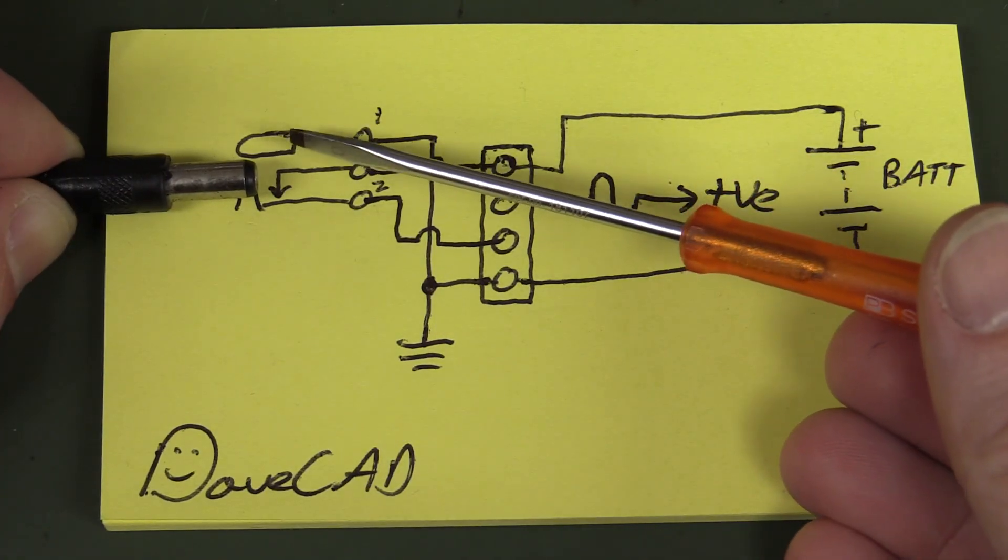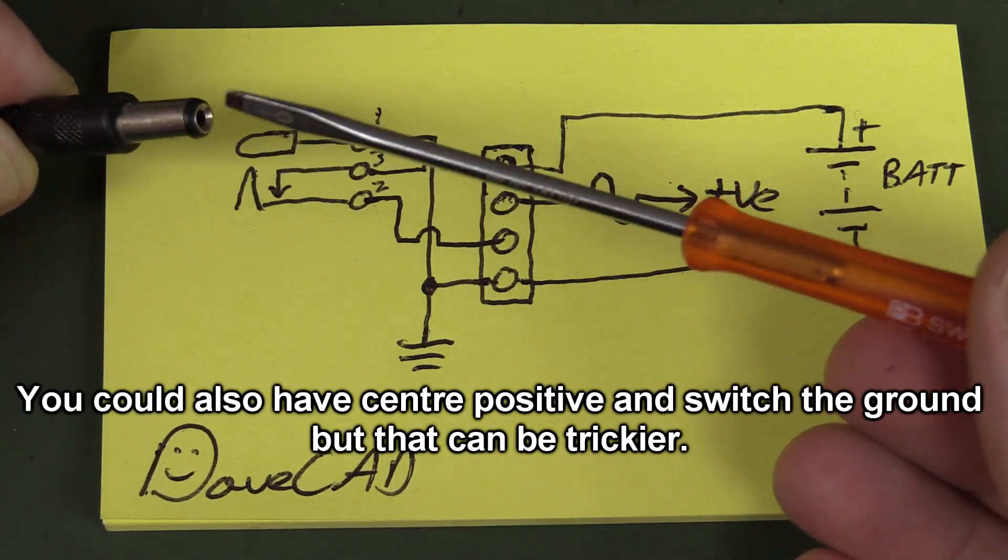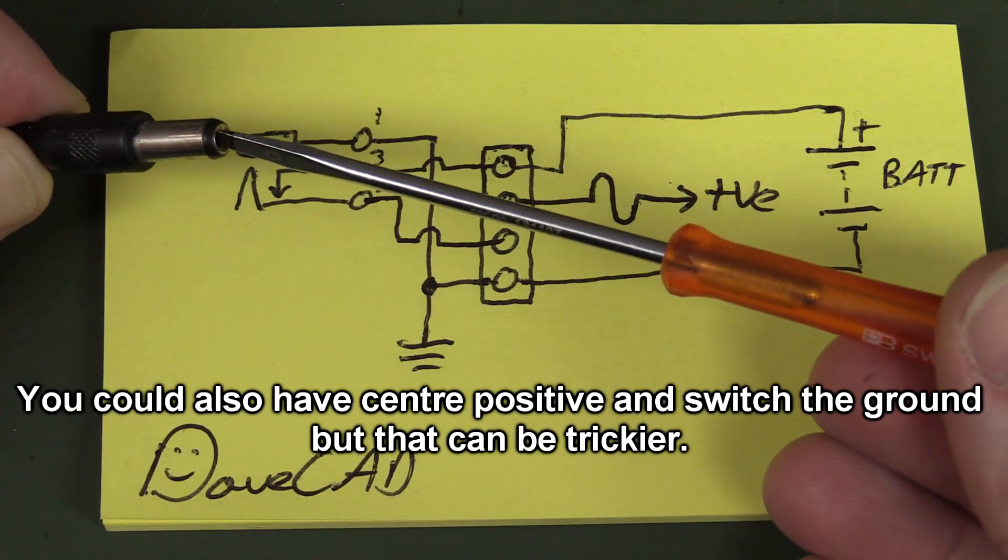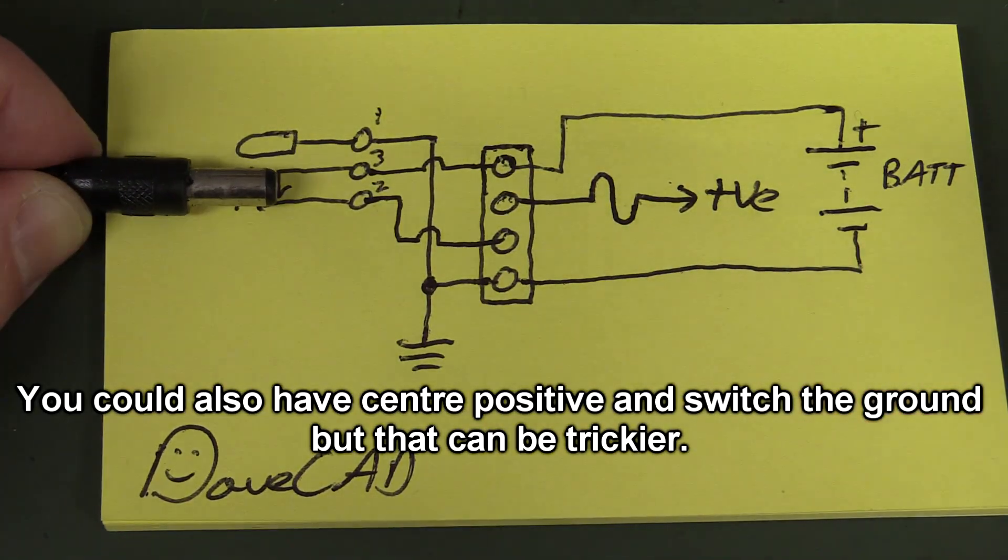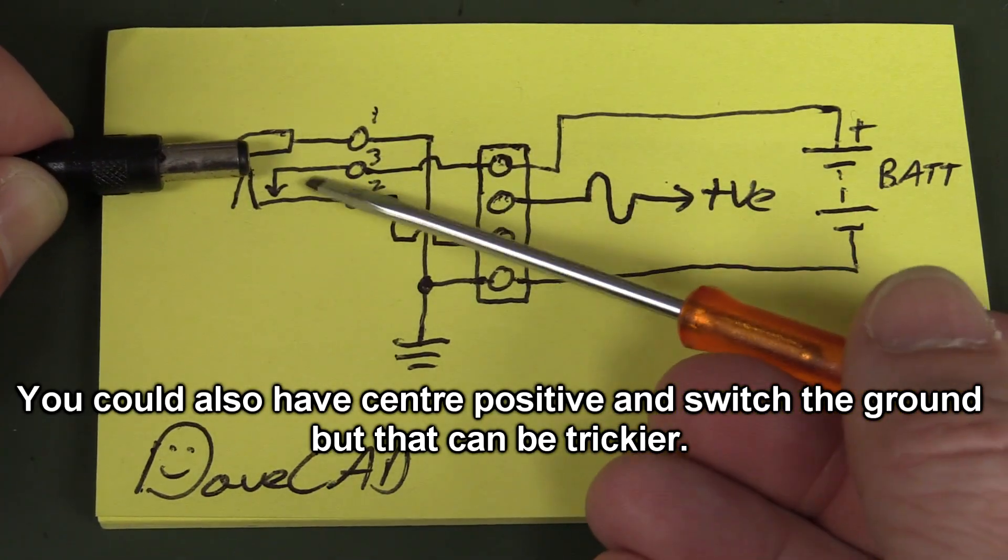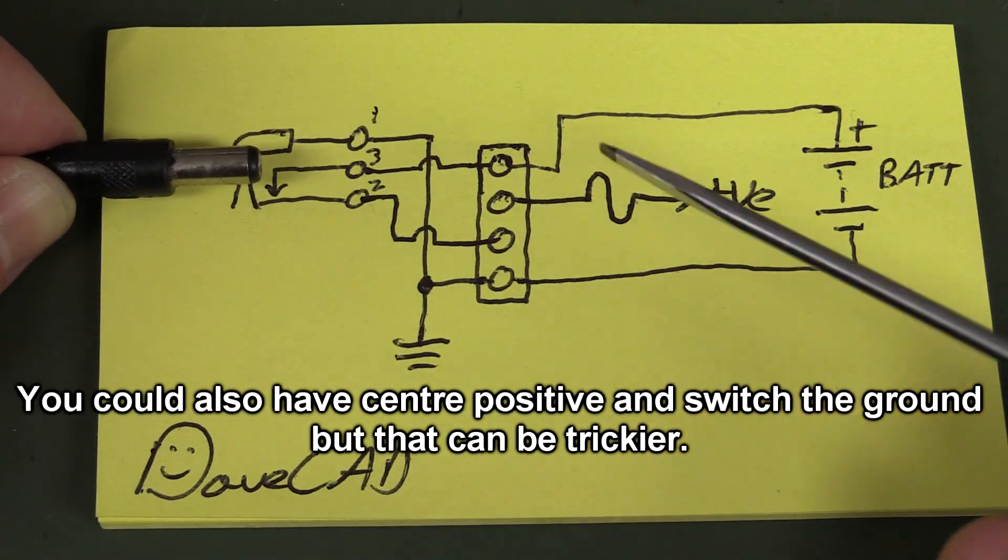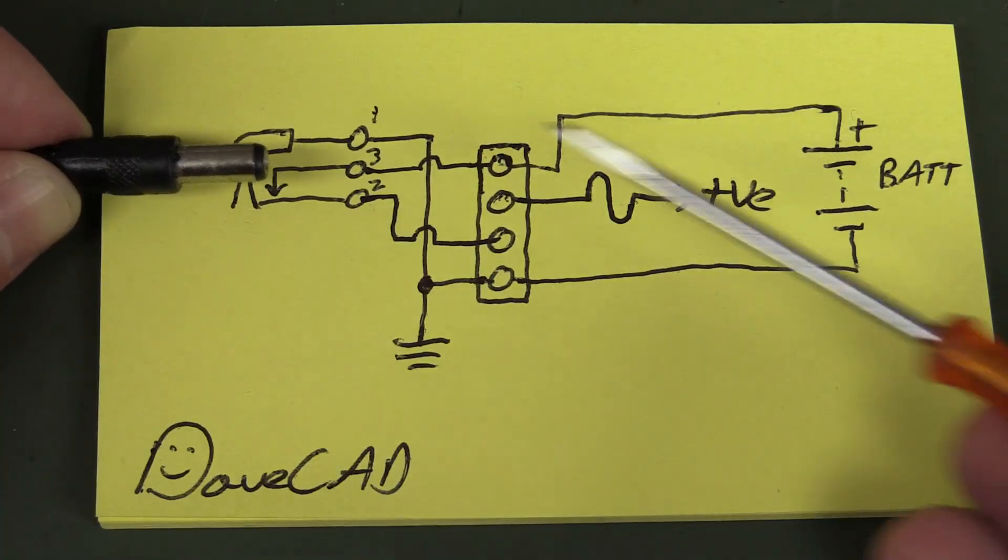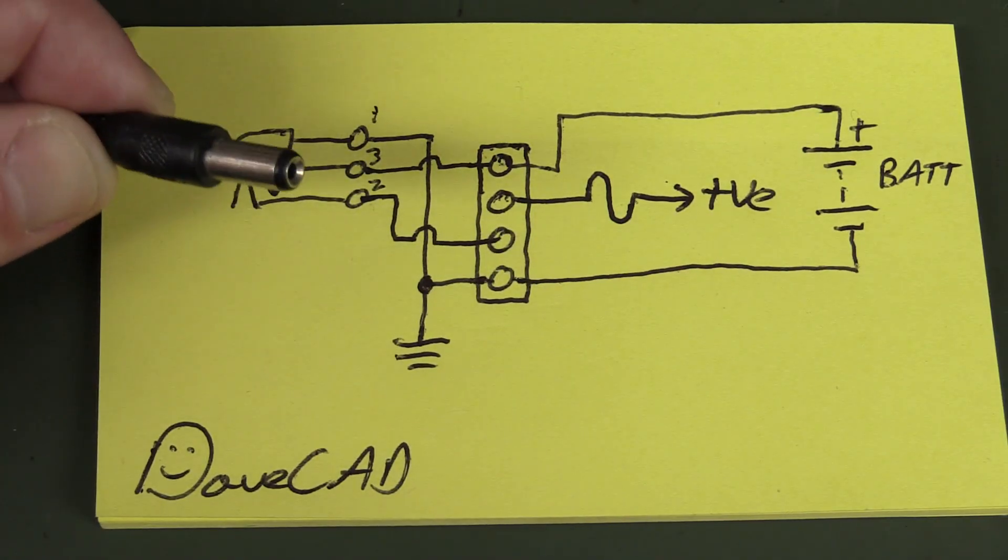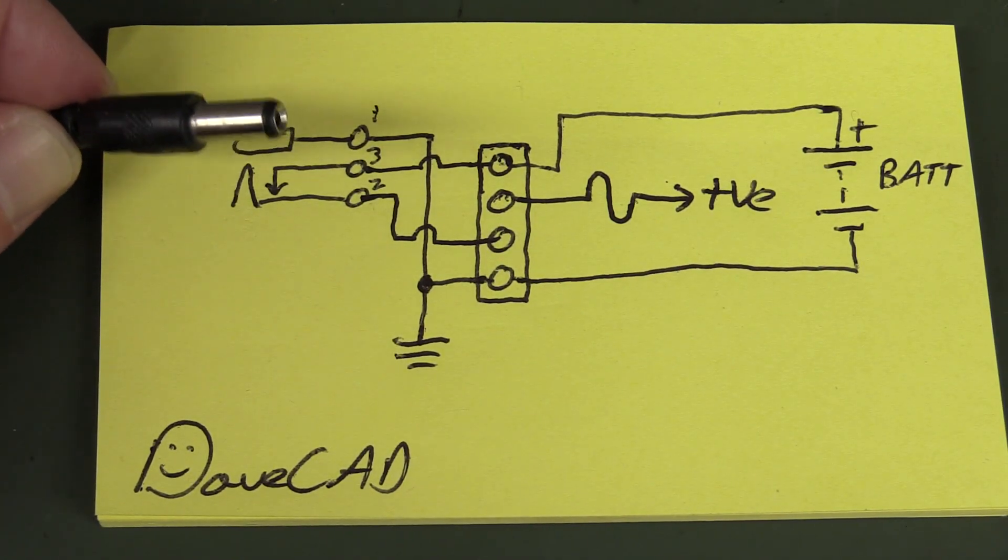And that's one of the reasons why, one of the advantages of why having a center negative actually is useful. Especially back in the old day, you could just use the contacts on the switch to switch between battery and external power use with no additional circuitry required.